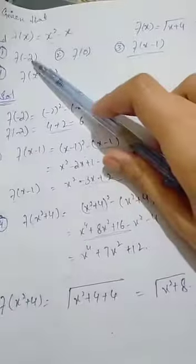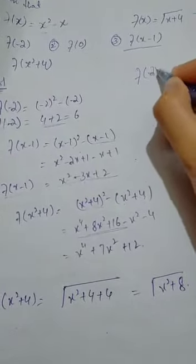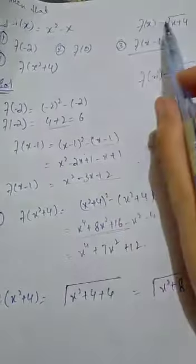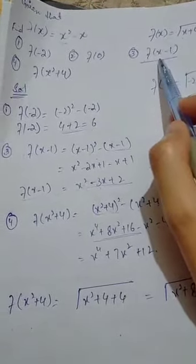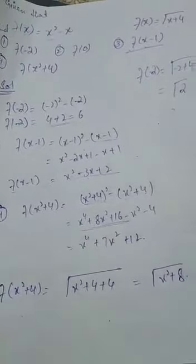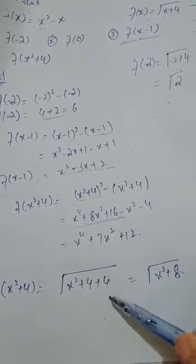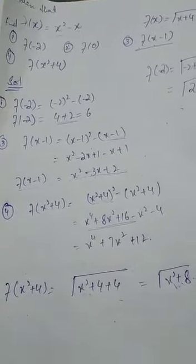This function we have found all terms for. Now for the other function g of x, if I find g of minus 2, x will be replaced by minus 2, giving square root of 2. Similarly, g of 0, g of x minus 1 where x is replaced by x minus 1, and g of x squared plus 4 gives square root of x squared plus 4 plus 4, which is square root of x squared plus 8. So question number 1 you have to solve it right now.